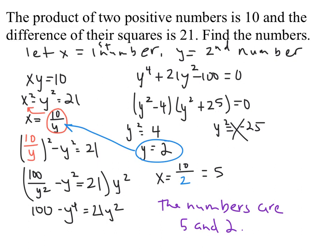From the zero product property, y squared equals 4 gives y equals plus or minus 2. Since the numbers are specified as positive, we take y equals 2. The other factor gives y squared equals negative 25, which has no real solutions. Plugging y equals 2 into x equals 10/y gives x equals 5. So the two positive numbers whose product is 10 and whose difference of squares is 21 are 5 and 2.